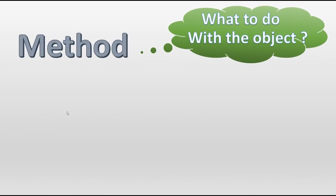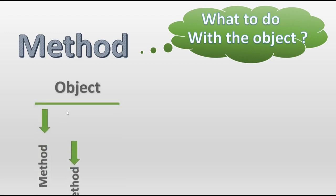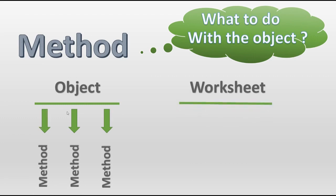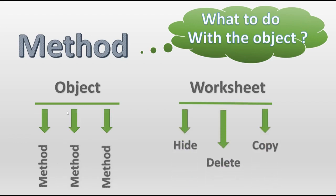Now let's speak about methods. A method replies the question: what to do with the object? One object can have some methods. Let's take worksheet as our object — a worksheet can have some methods.